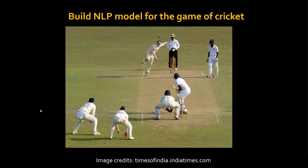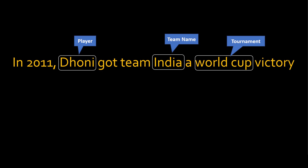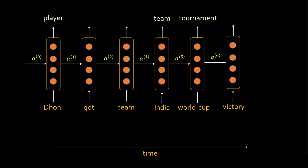Let's take the example of the game of cricket. Let's say you are building an NLP model for this game and the task you have in hand is to recognize entities in a given sentence. For example, Dhoni would be a player name, India would be a team name, and World Cup would be a tournament. Similarly, you can have a different statement and identify entities — this is called named entity recognition — and based on the previous video you can build an RNN that looks like this.